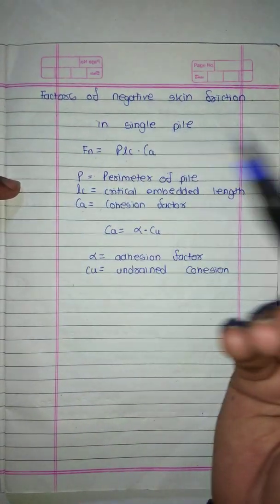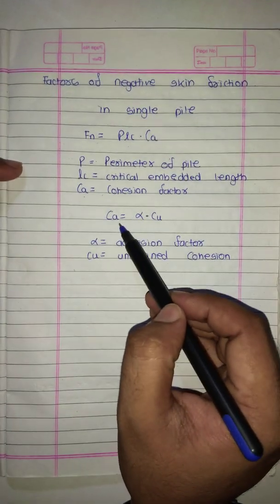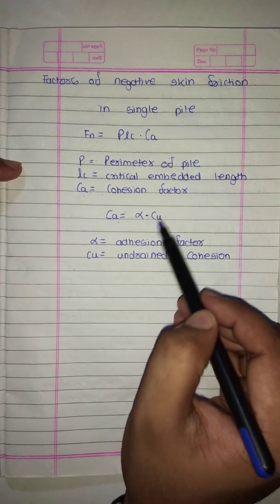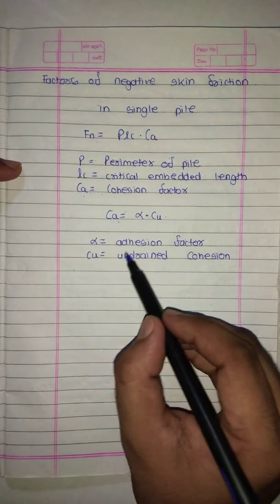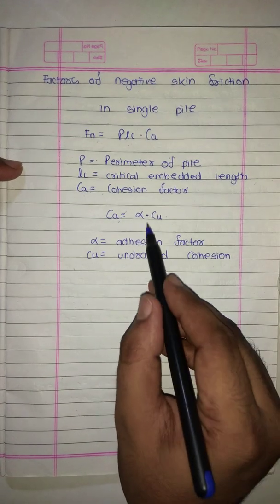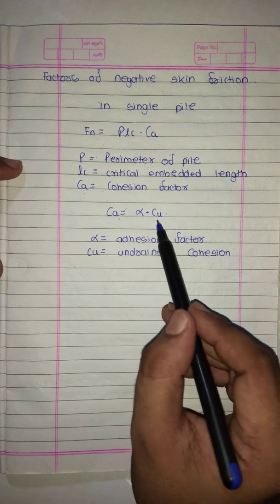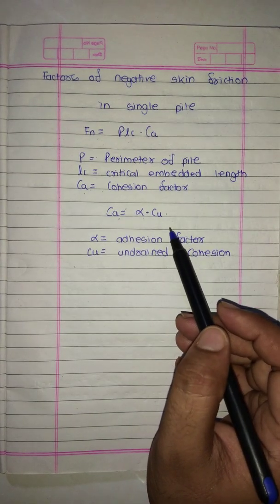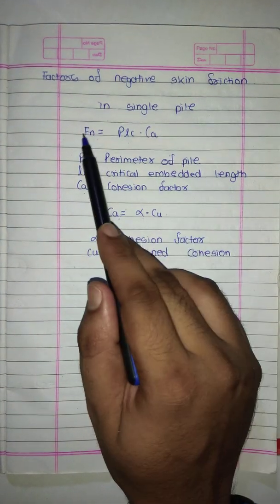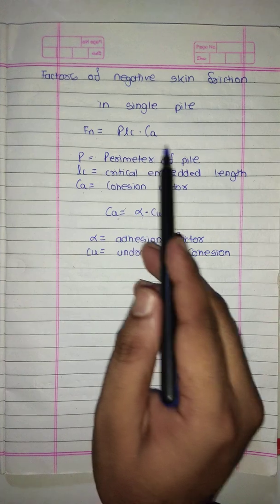Here, ca is defined as alpha multiplied by cu, where alpha is the adhesion factor and cu is the undrained cohesion. If you know the adhesion factor and the undrained cohesion, you can easily find ca. By substituting ca into the negative skin friction formula, you will find the negative skin friction of a single pile.